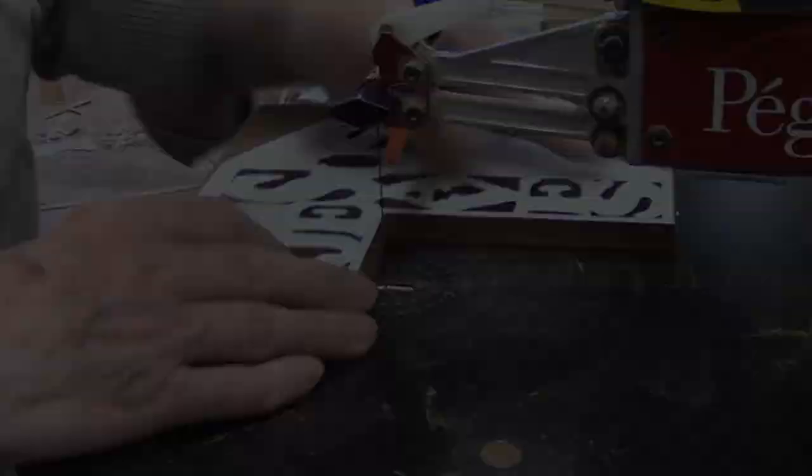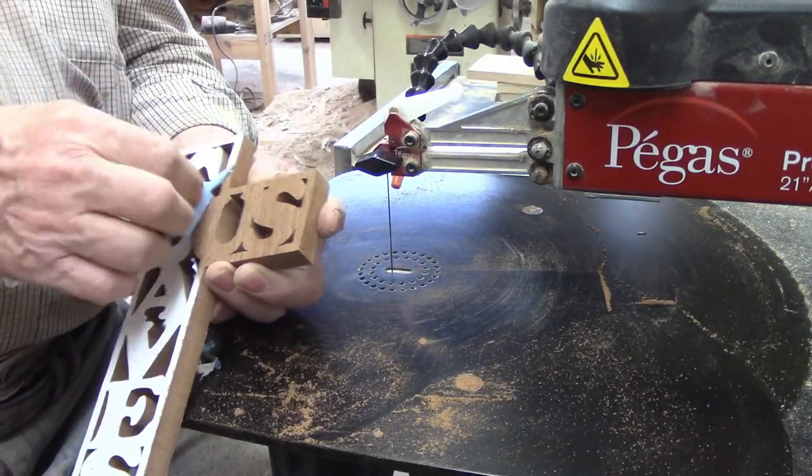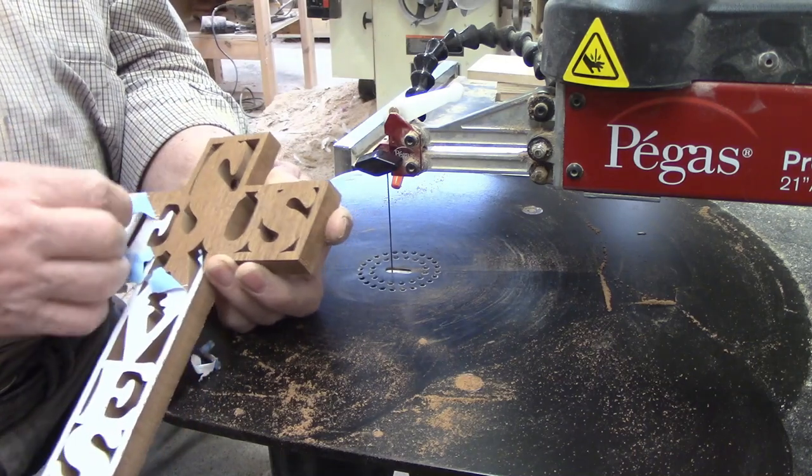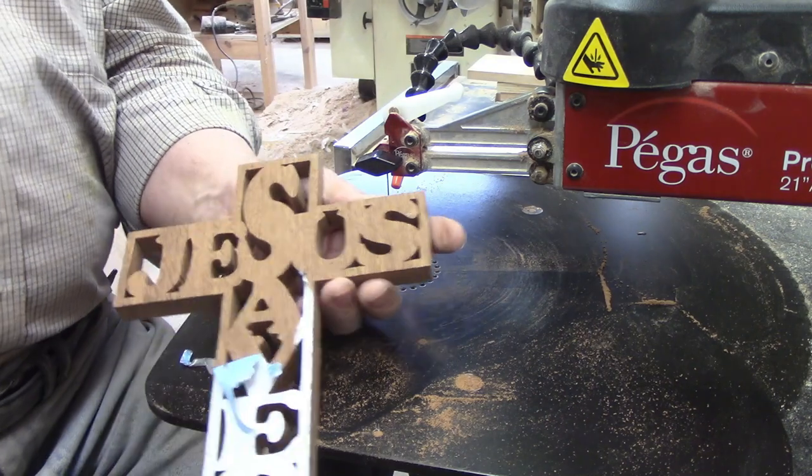I used the same technique for the rest of the cuts around the outside of the cross. I started at the outside, cut along the line until reached an intersection and backed out to the edge. I swiveled the work piece 90 degrees and then made the next cut in the same manner.